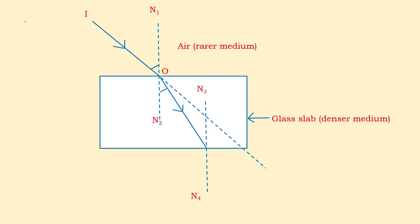Now when it comes out, another normal N3 N4 is drawn, and it passes like this RR'. IO is the incident ray, OR is the refracted ray, RR' is the emergent ray. Angle ION1 is the angle of incidence, but angle RON2 is the angle of refraction.